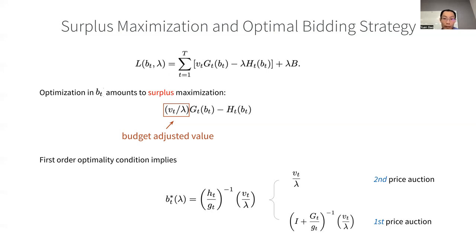In the first-price auction, there is a positive term added to the identity. And as a result, the optimal bid is a bit smaller than the lambda-adjusted value. In other terms, this means that we need to apply bid shading in first-price auctions, and exactly how much we should shade is dependent on our estimation of the winning probability.